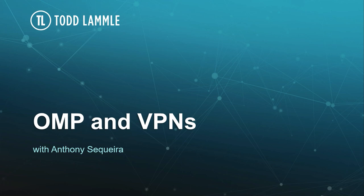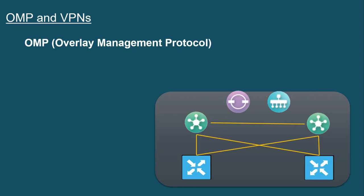So let's focus now on two really important ones, and that's the overlay management protocol and VPNs. The overlay management protocol, or OMP, is going to be the key control plane mechanism for us in the SD-WAN.